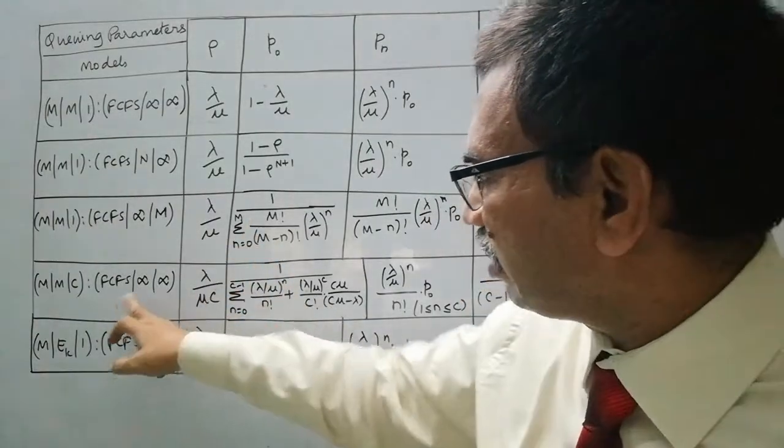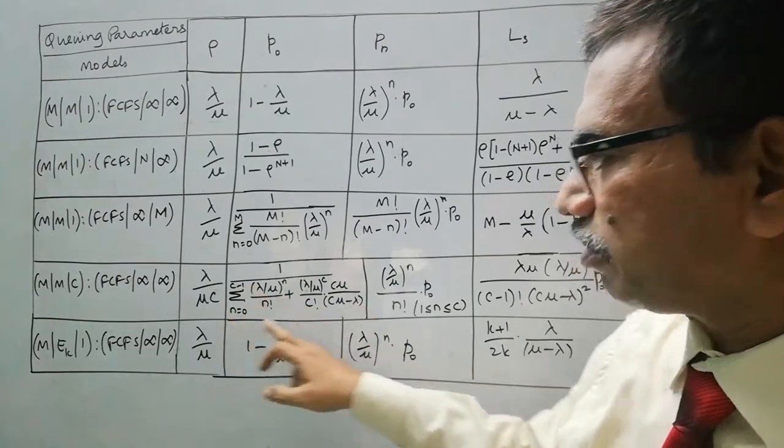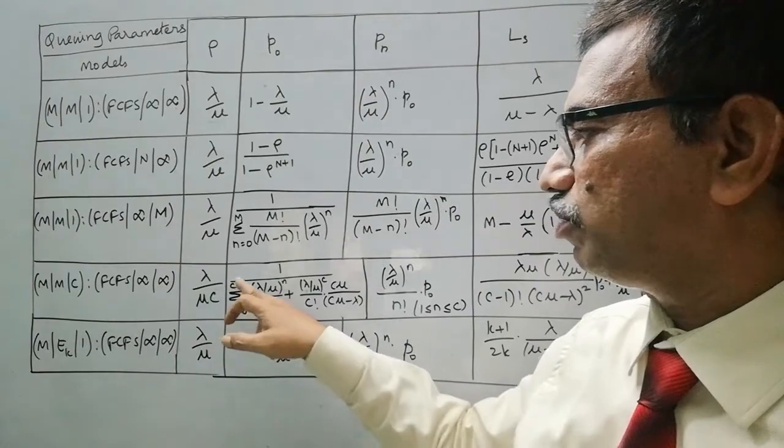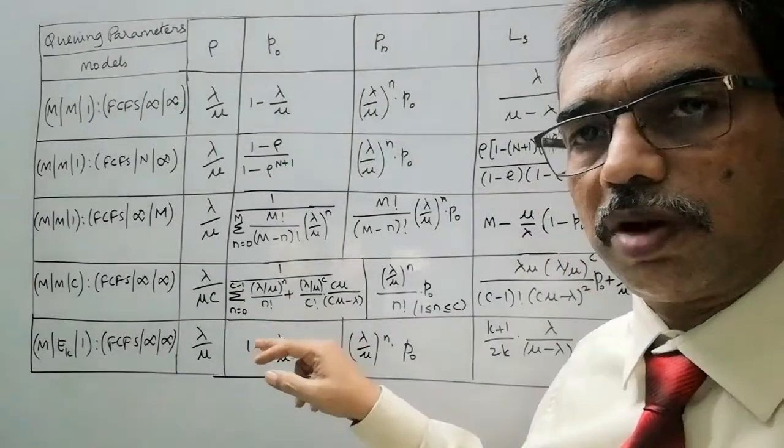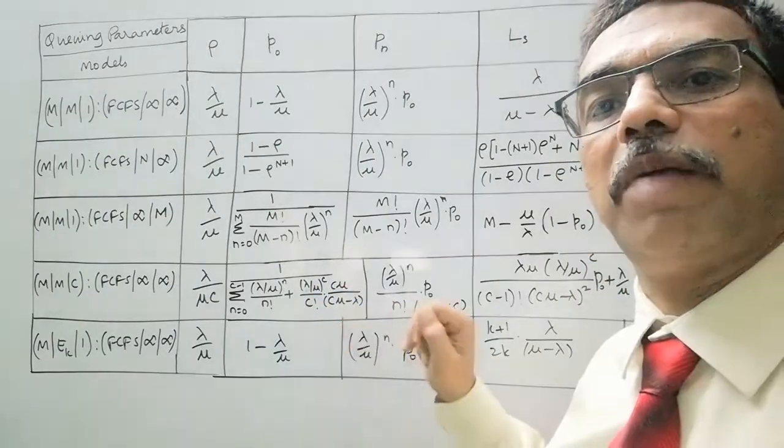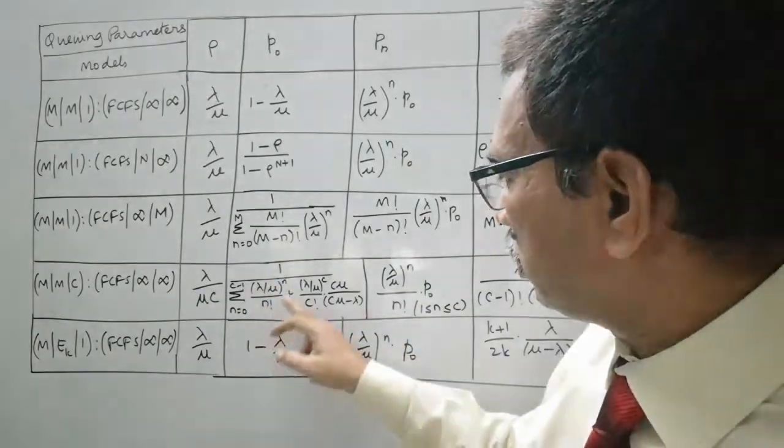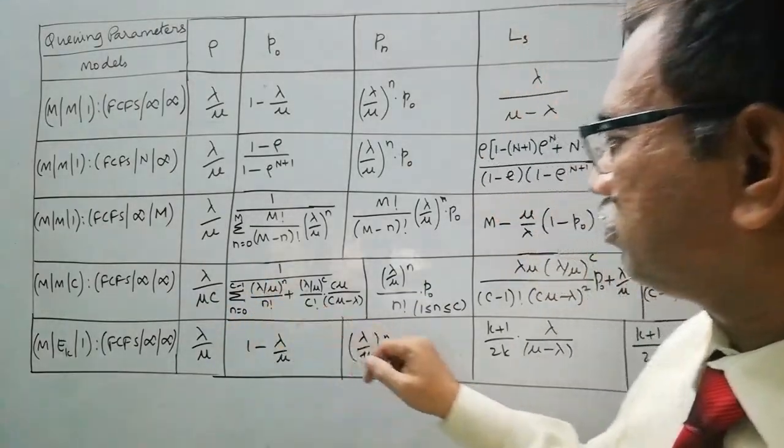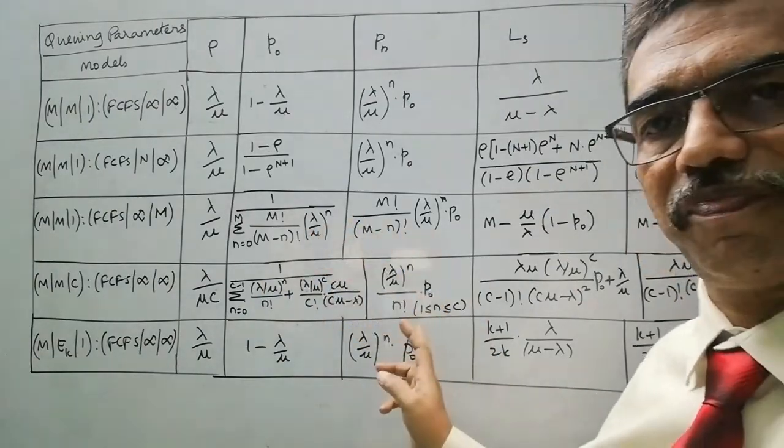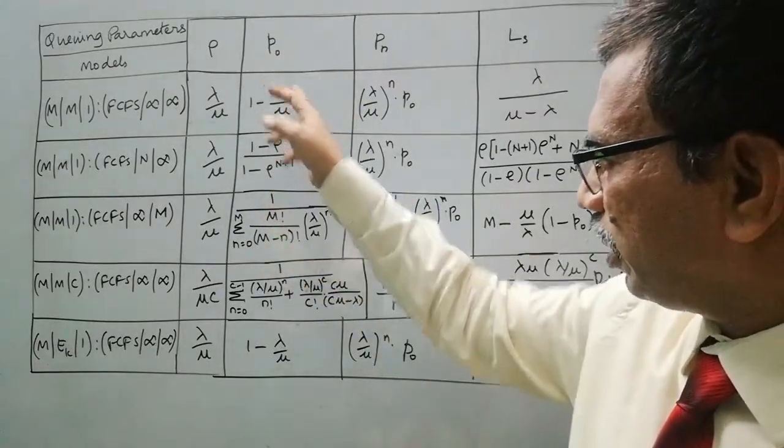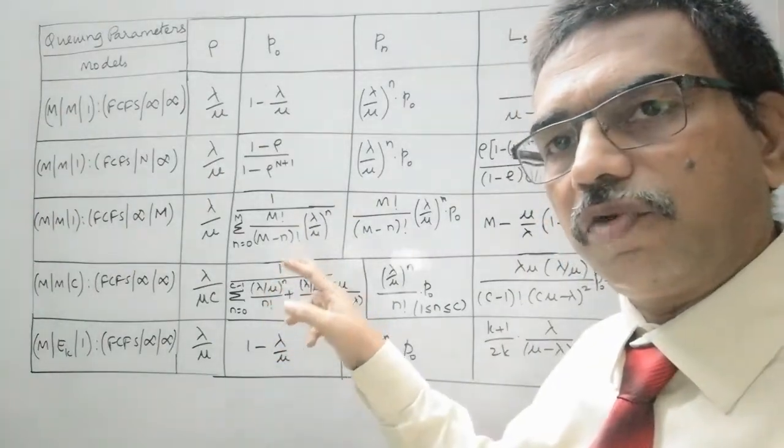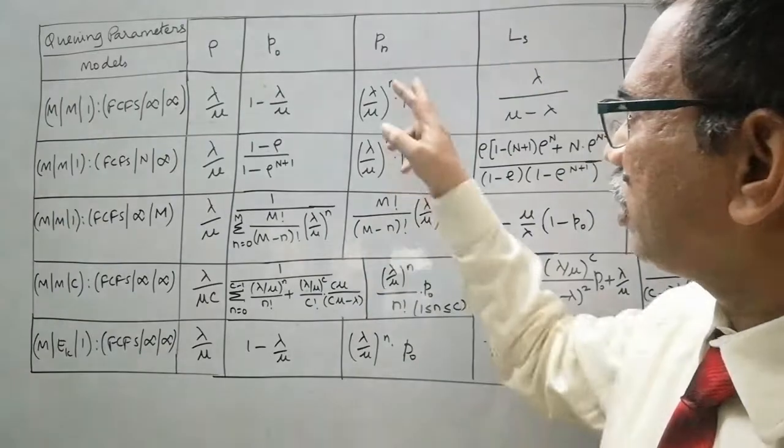In the same way, for multi-server model, we have this term in the denominator, Σ(λ/μ)ⁿ/n! where n varies from 0 to c-1, where c is the number of servers, plus (λ/μ)ᶜ/c! × cμ/(cμ-λ). In this, excluding this Σ, take the first term, that is (λ/μ)ⁿ/n! × P₀, just like here. So once P₀, the relation for P₀ is, I mean, we could remember, easily we can draw the relation for Pₙ, like this.